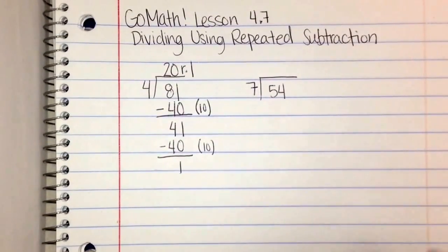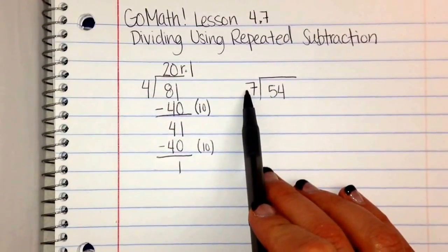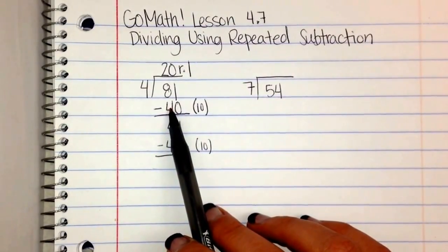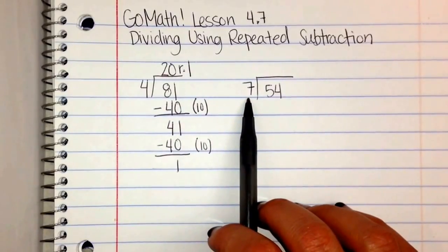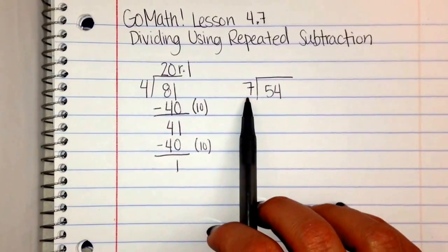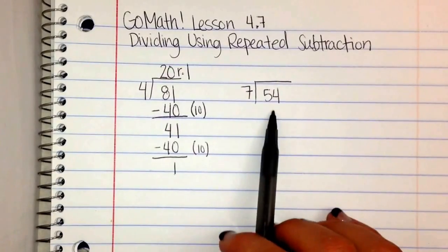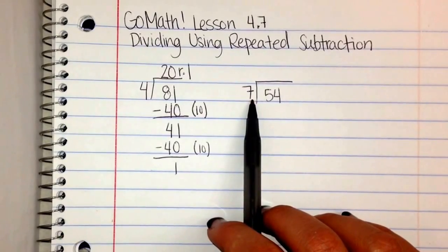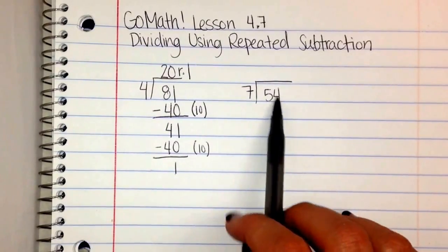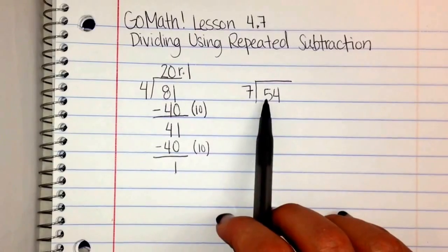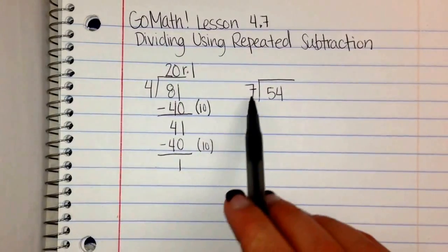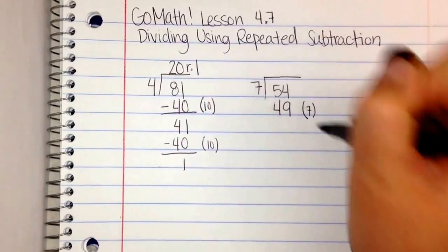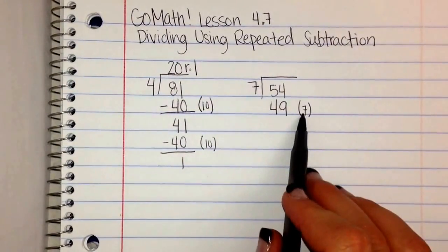Let's try a different one: 54 divided by 7. I like to choose the 10th multiple of my divisor because it's easy to figure out and subtract. However, in this case, the 10th multiple of 7 is 70, and I can't do 54 take away 70 — it's too much. So I have to think of a smaller multiple of 7. I'll think 7 times 7, which is 49, and that gets me pretty close. The closer I can get to the original number, the fewer times I have to subtract. So I write 49 down and put a 7 in parentheses to show there are seven 7's in 49.